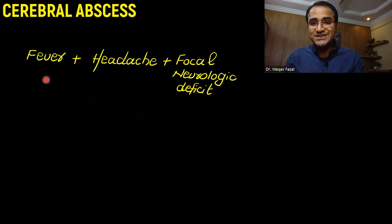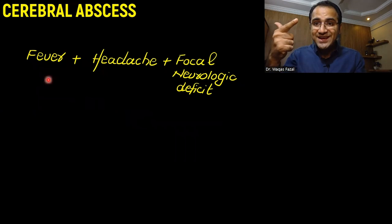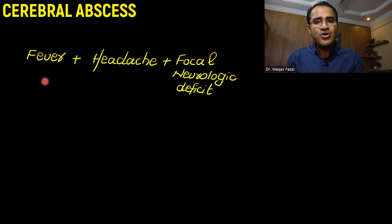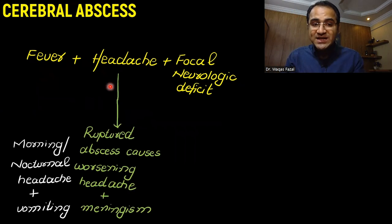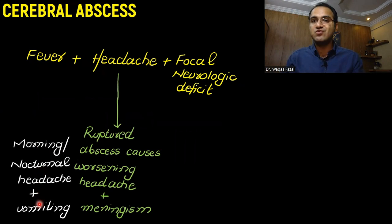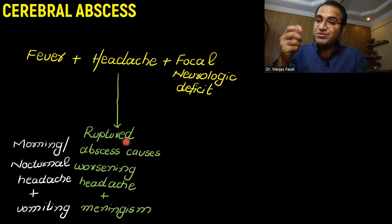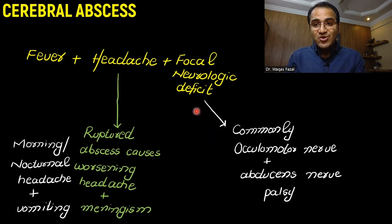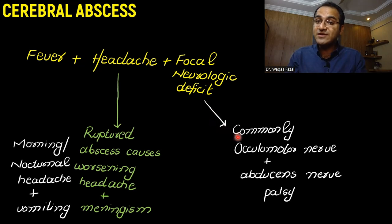It usually presents with fever, headache, and focal neurological deficits. The patient will have on and off fever, and the headaches will be morning or nocturnal headaches associated with vomiting. If the abscesses rupture, the patient will have worsening headaches with signs of meningism. In focal neurological deficits, patients will commonly have oculomotor nerve deficits and abducent nerve palsy.